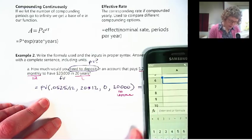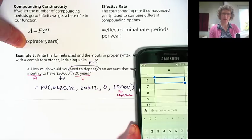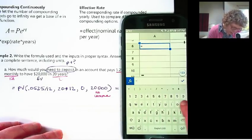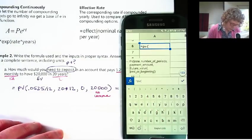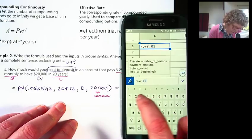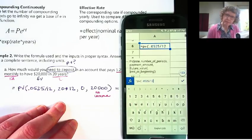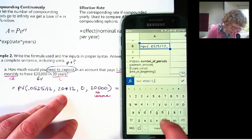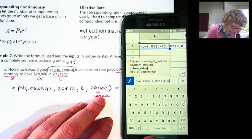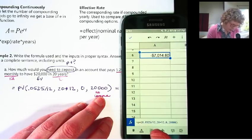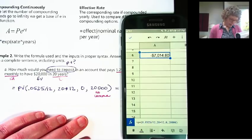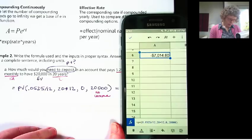Okay. Let's get a number. I'll just pick a new cell. So we go equals present value. You can capitalize it or not, it doesn't matter. Again, it pops up the argument. 0.0525 divided by 12 comma 20 times 12 comma 0 comma 20,000. Close it up. Okay. Now this is what we wanted to know. We would have to put in $7,014.80 now, at that particular interest rate and compounding, in order to have 20,000 in 20 years.